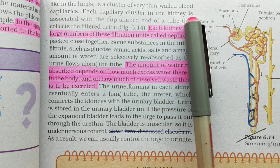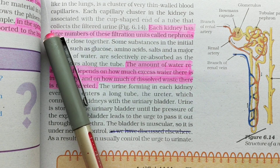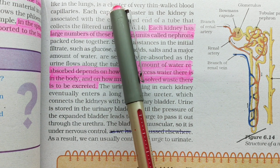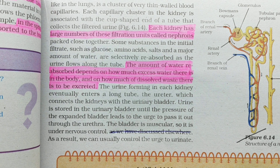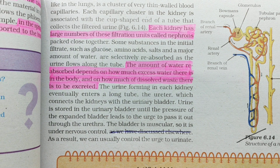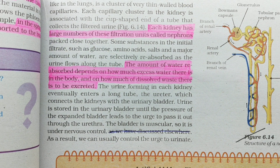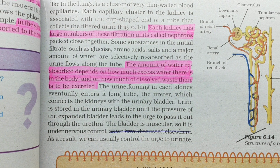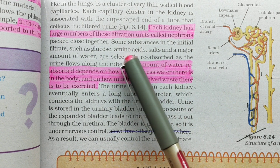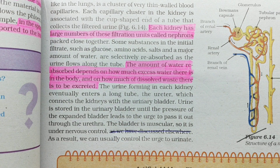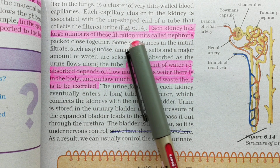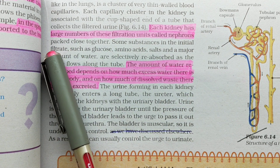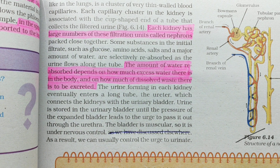Each capillary cluster in the kidney is associated with the cup-shaped end of a tube that collects the filtered urine. Kidneys mein cluster of very thin-walled blood capillaries hoti hain — capillaries ka jhund — aur har capillary cluster ke saath ek cup-shaped end ka tube hota hai jo urine filter karti hai. Each kidney has a large number of these filtration units called nephrons. Is filtration unit ko nephron bolte hain, aur yahan urine ki filtration hoti hai. The nephrons are packed close together.